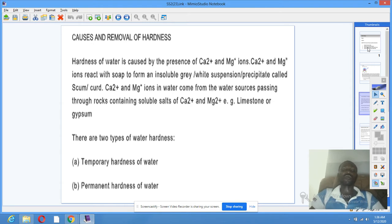Causes of hardness of water. Hardness of water is caused by the presence of calcium and magnesium ions of hydrogen carbonate and sulfates. There are two types of hardness.